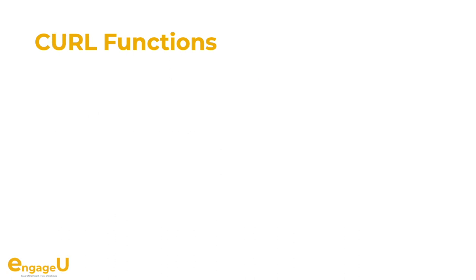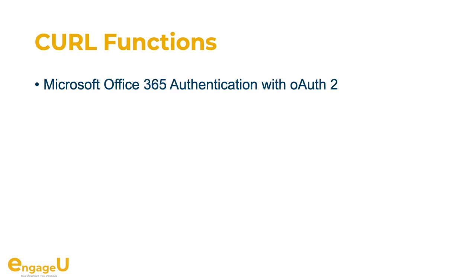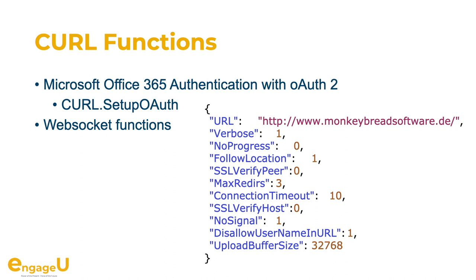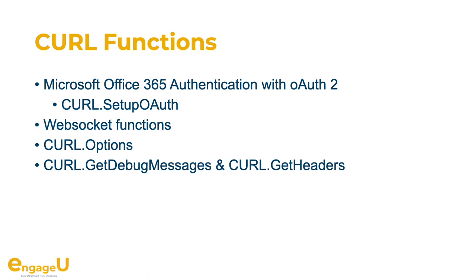Then we have curl functions. Curl is a universal library we use for all HTTP, FTP, SFTP, email, and other functionality. We now have functions to work with Microsoft Office 365 authentication using OAuth2, and you can use our setup OAuth function for that. We also got WebSocket functions. If you'd like to debug the plugin, you can query all options set using our curl.options function and get a JSON back with all options set, and also check our curl get debug messages function and get header functions to query the debug messages and headers for your current HTTP transfer.